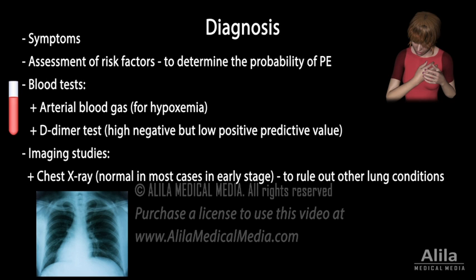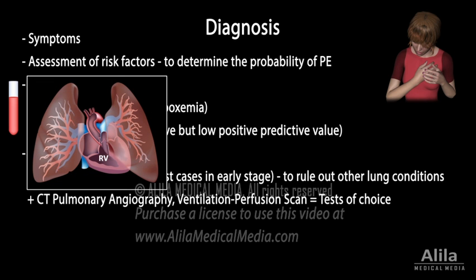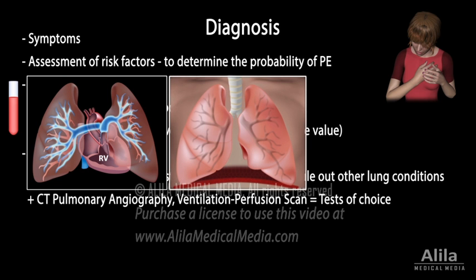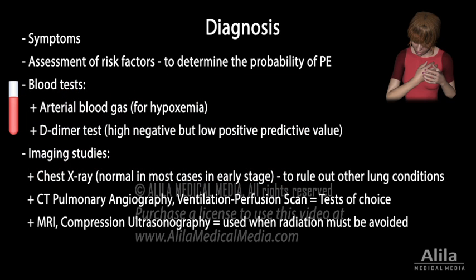Imaging options include chest X-ray, which is usually normal in pulmonary embolism. A chest X-ray is performed to rule out other lung conditions that may produce similar symptoms. A sudden low blood oxygen with a normal chest X-ray indicates a high possibility of pulmonary embolism. CT pulmonary angiography, which allows visualization of pulmonary arteries, and ventilation perfusion scan, which maps blood flow against air flow, are the tests of choice for diagnosis. MRI and compression ultrasonography are less sensitive and typically used when radiation must be avoided.